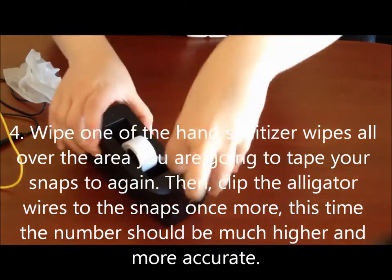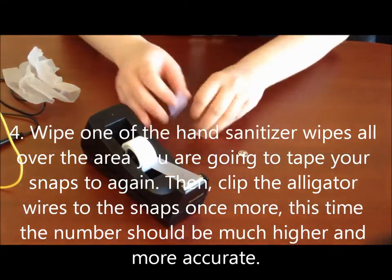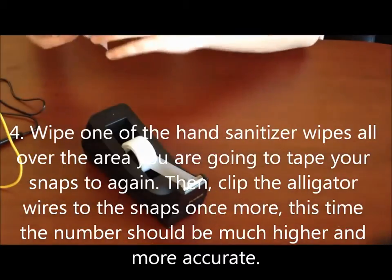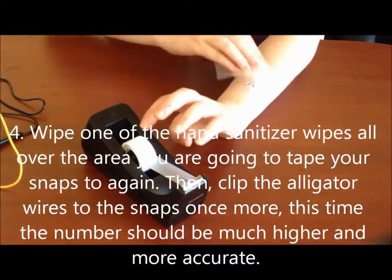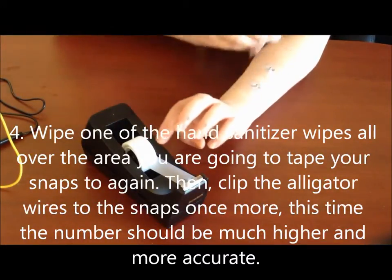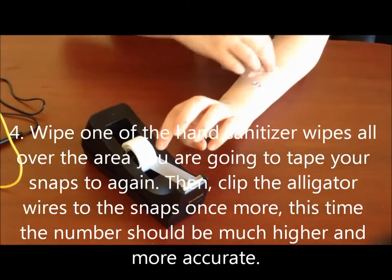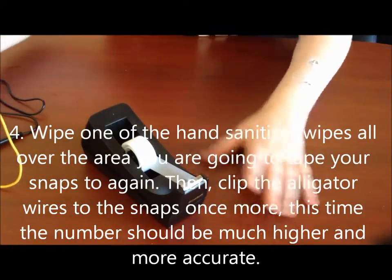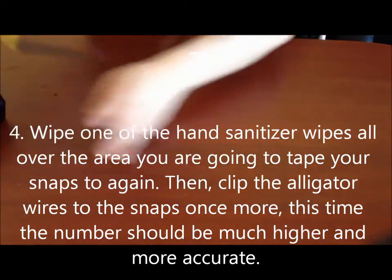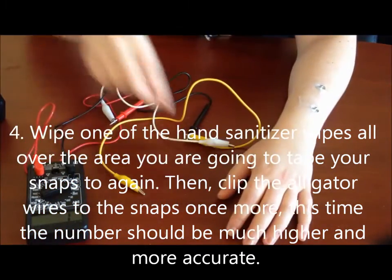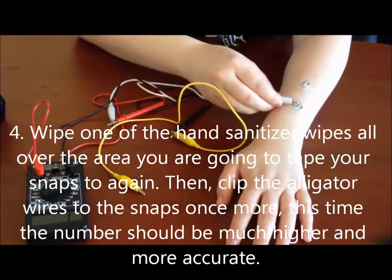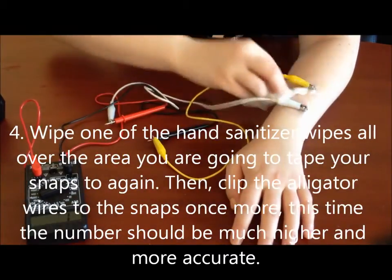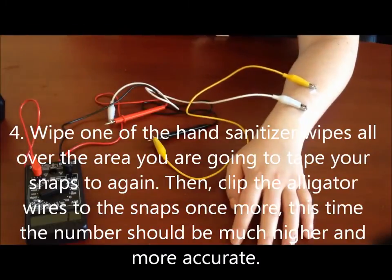Now we're going to tape the snaps to our arm. The tape's not going to stick as well this time because of the liquid. That's okay. And then again, make sure the whole area is wet with the hand sanitizer wipes. And then we're going to measure our resistance once again with the digital multimeter. So we're going to clip each of the alligator clips to one of the sewing snaps. You're going to write down whatever you get.